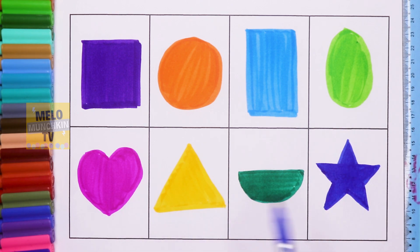This one is yellow triangle, this one is dark green semicircle, this one is dark blue star. Okay kids, I hope you have enjoyed this video.